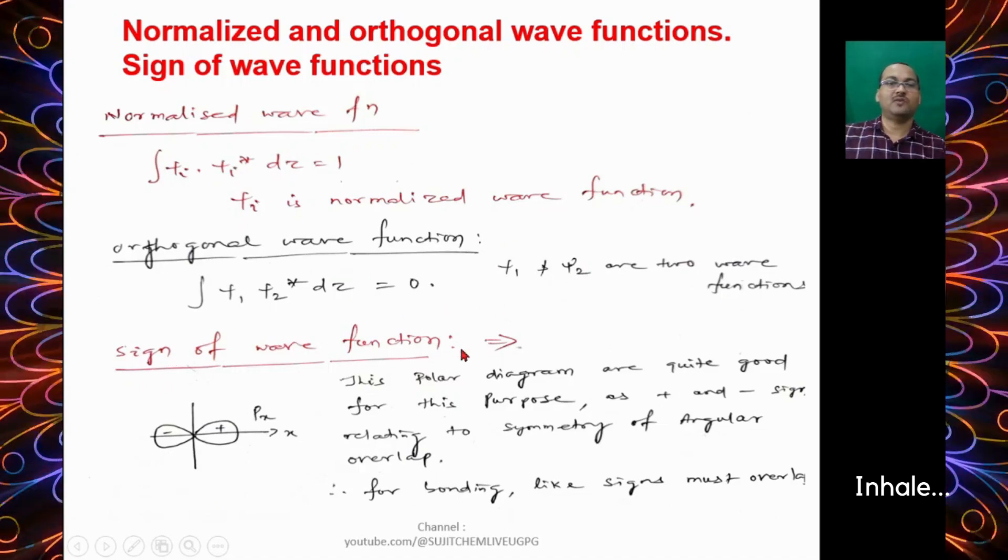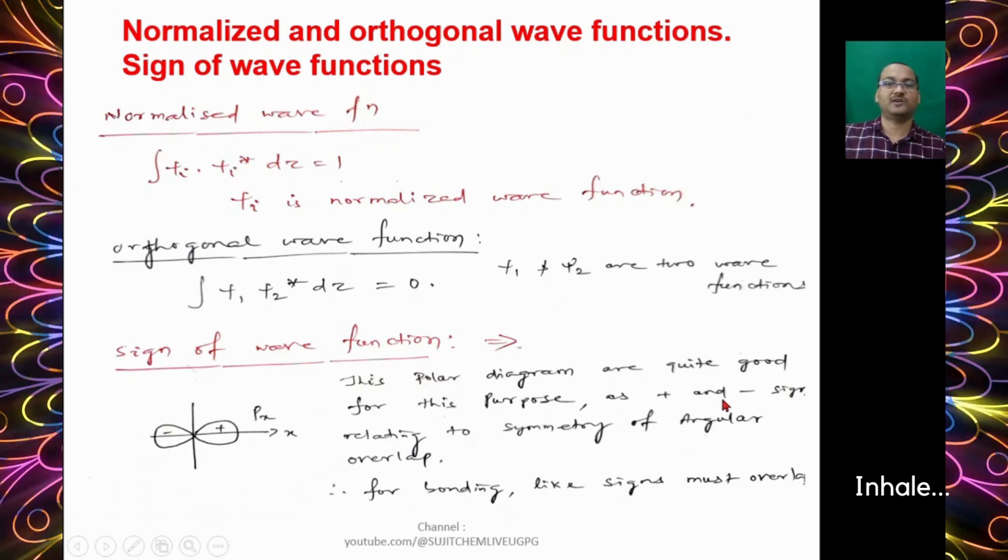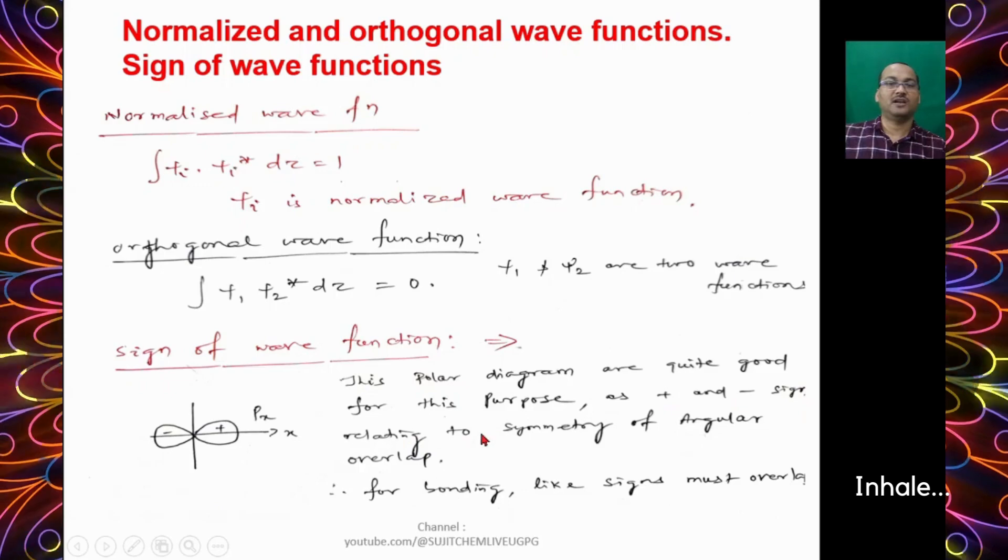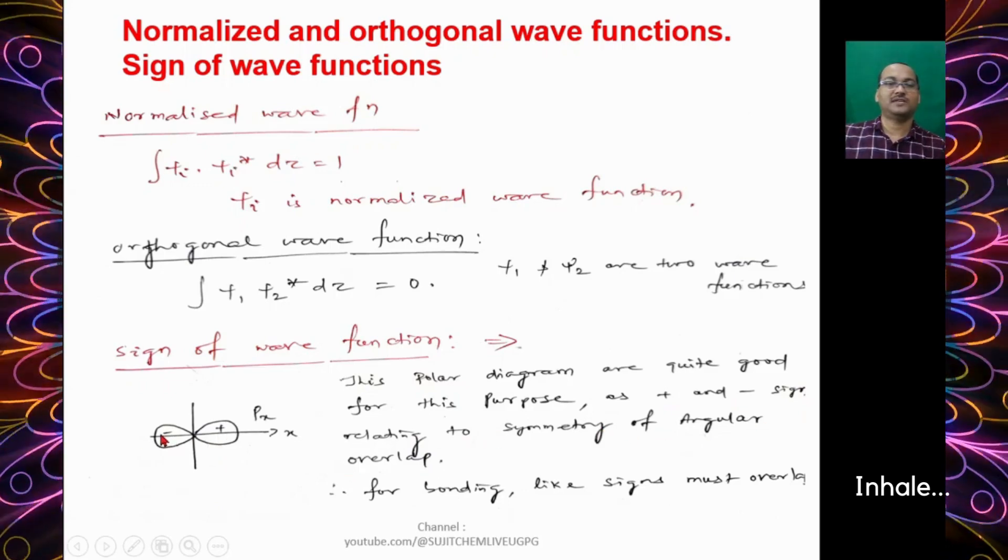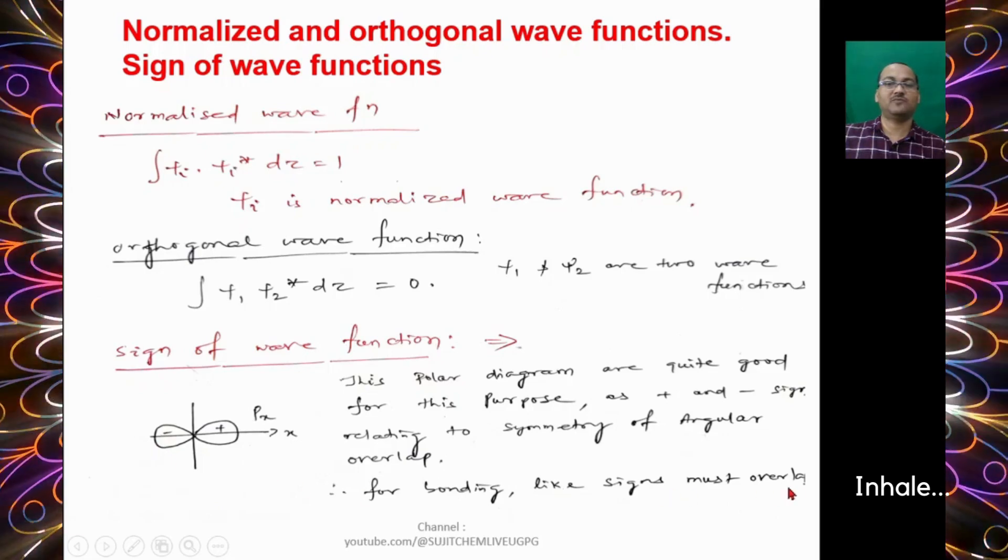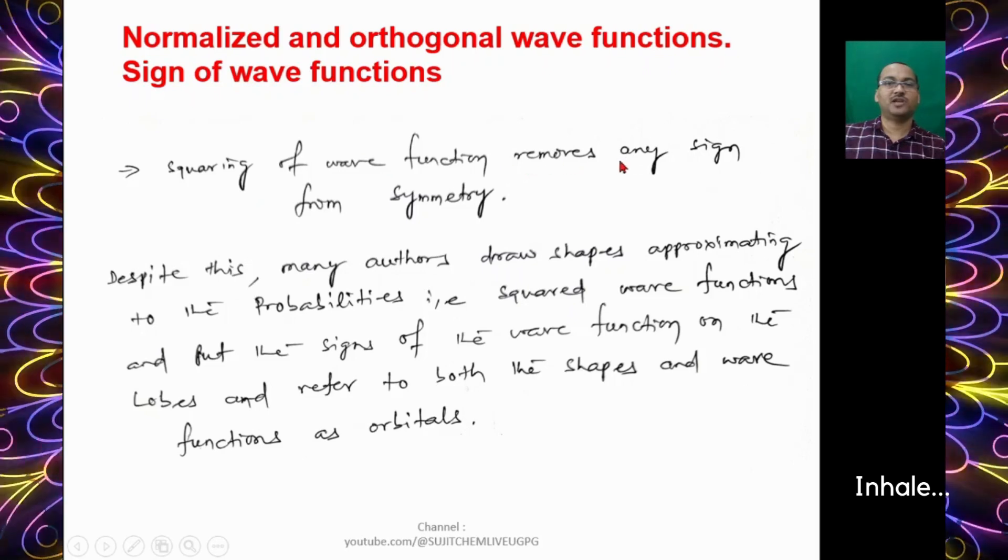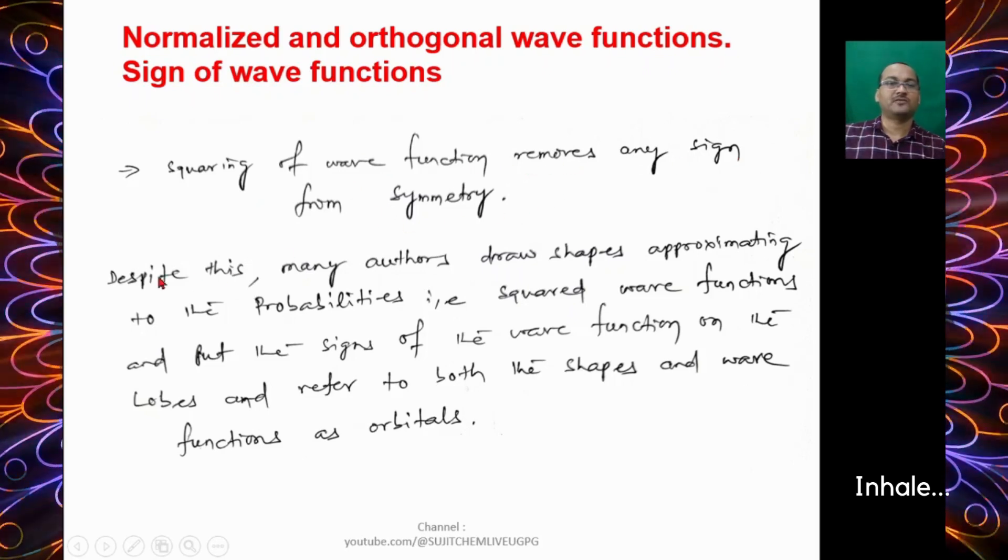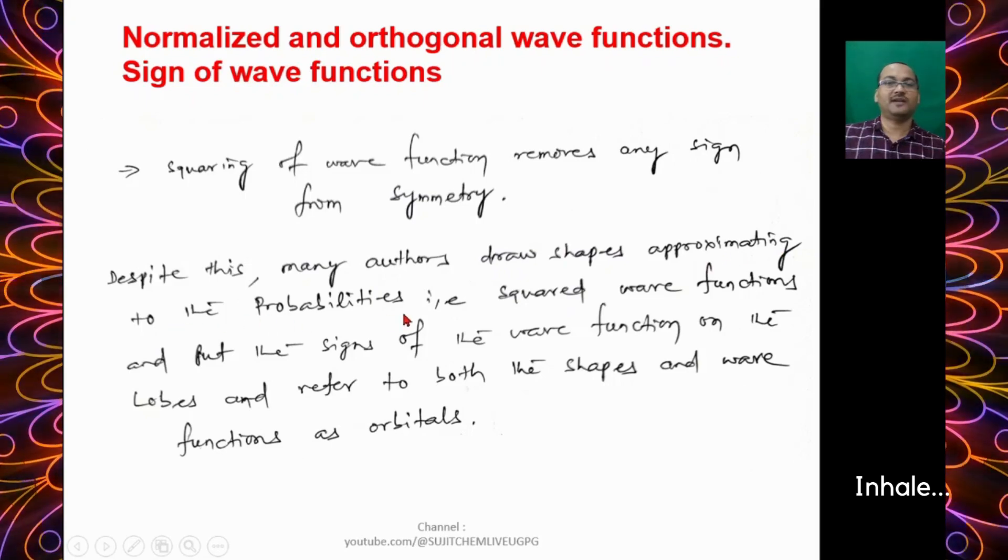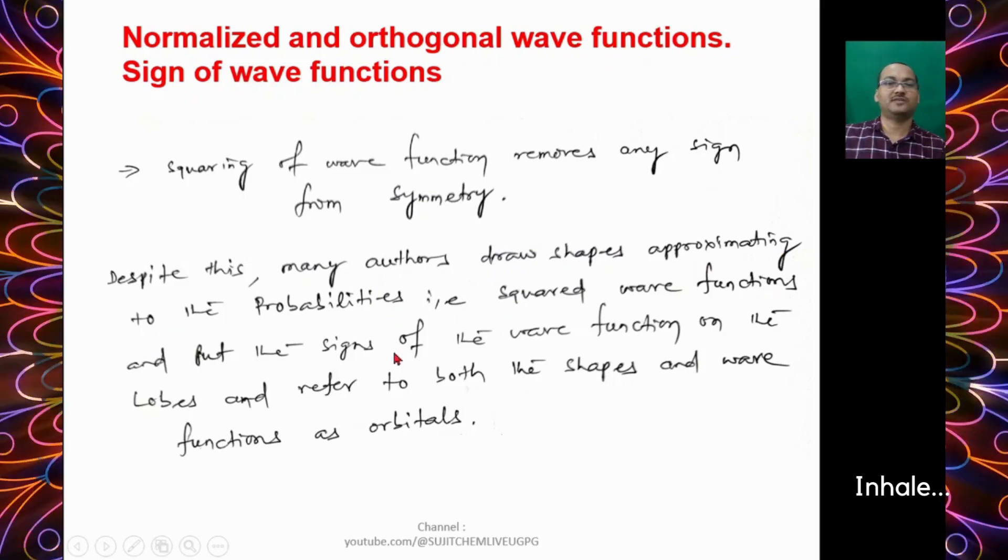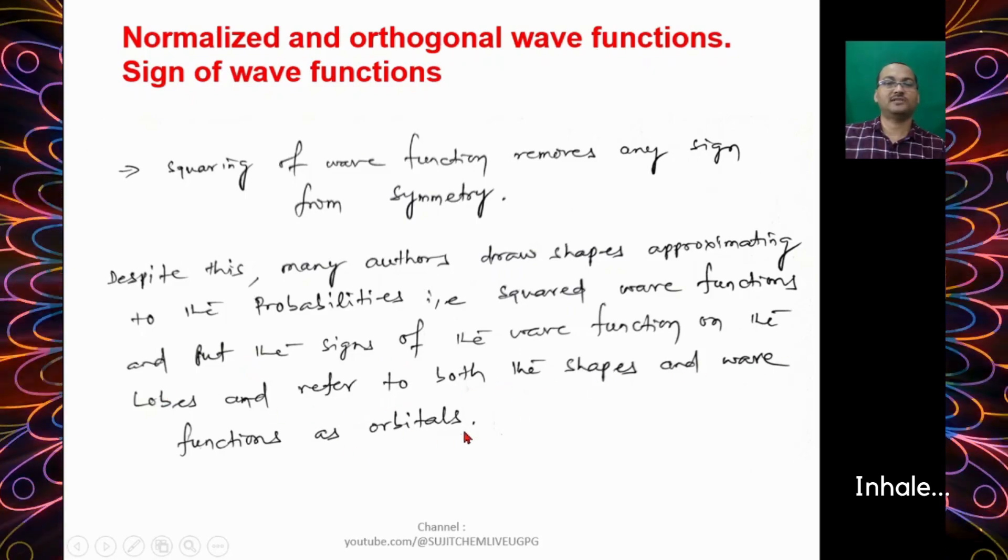When we talk about the sign of wave functions, the polar diagram is quite good for this purpose as plus and minus signs relate to the symmetry of angular overlap. For bonding, the like sign must overlap. Squaring the wave function removes any sign from the symmetry. Despite this, many authors draw shapes approximating to the probabilities, the squared wave functions, and put the signs of the wave function on the lobes and refer to both the shapes and wave functions as orbitals.